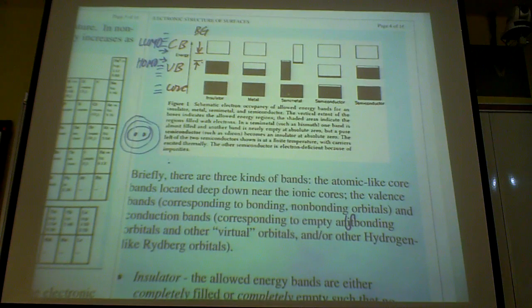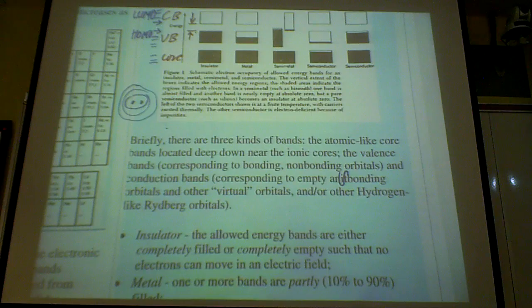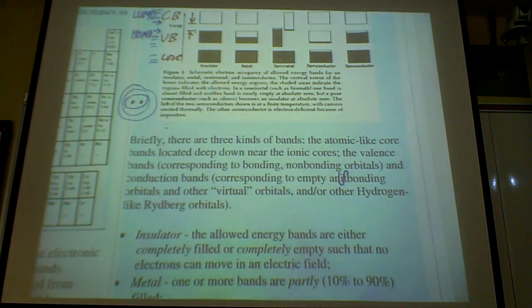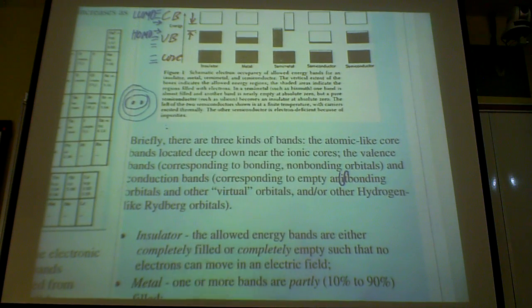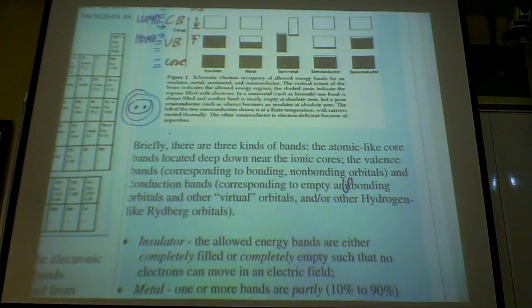Okay, so if you take this picture, how do you classify, you can classify this band by another way. You can call them insulators, such that all the allowed energies, they are either completely filled or completely empty. And so what happens if they are completely filled, such as like this, you are completely filled, completely empty, the band.